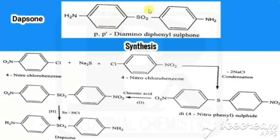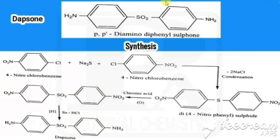The structure of dapsone: it has two phenyl rings, each bearing an amino group at the para position, with a sulfone (SO2) group in the center. The chemical name is 4,4'-diaminodiphenyl sulfone.